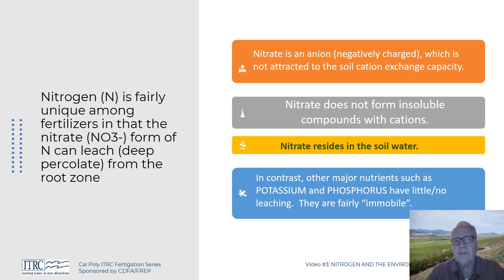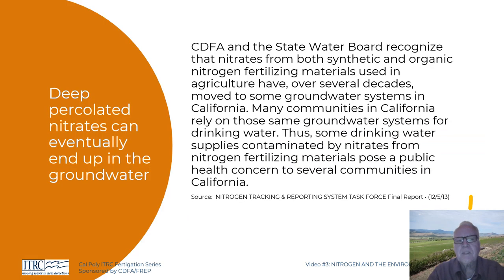The other major nutrients are fairly immobile and don't move very much. If you have a huge manure application from pig waste, for example, you can overload the system with phosphorus. In the eastern states they do have problems with phosphorus actually leaching out, but in the western U.S. you normally don't have that problem.